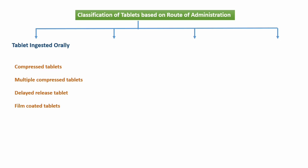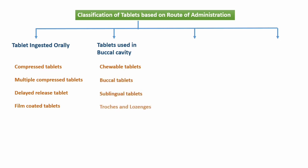The other category is tablets used or ingested in the buccal cavity. In this category, the tablets are released in the oral or buccal cavity — not in the gastrointestinal tract (GIT). This category includes chewable tablets, buccal tablets, sublingual tablets, troches and lozenges, and dental cones.